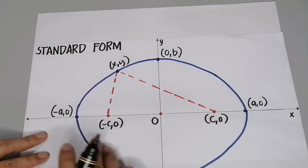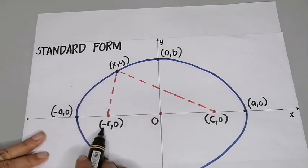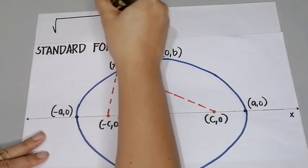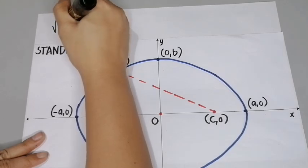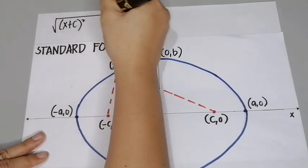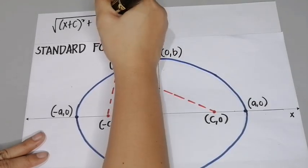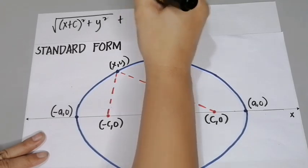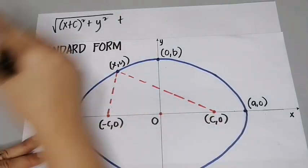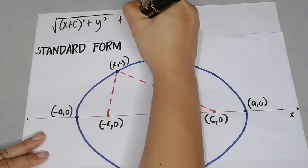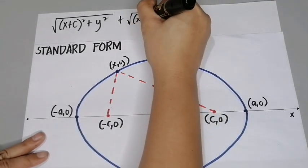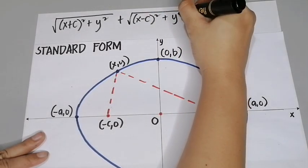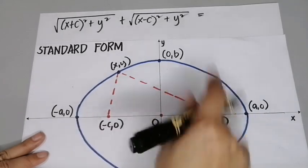Using the distance formula, we have the square root of (x+c)² + y² plus the square root of (x−c)² + y², and that is equal to 2a.